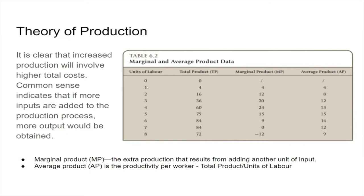With one person working, we can make four units. If we get two people, we can make 16. Notice that two people are much more productive than just one, because they get to help one another, they specialize. These sorts of factors explain the gains.